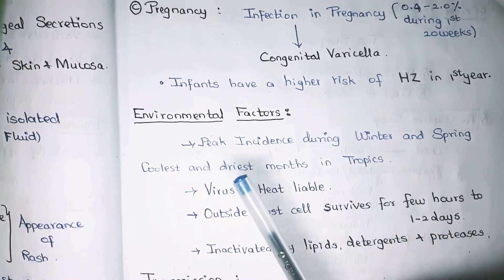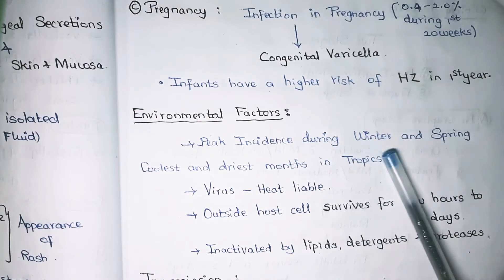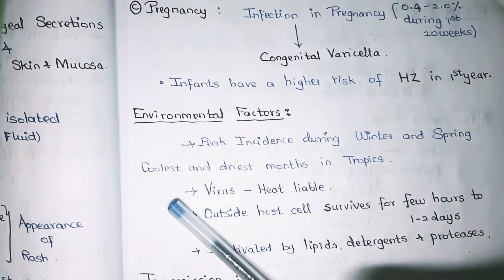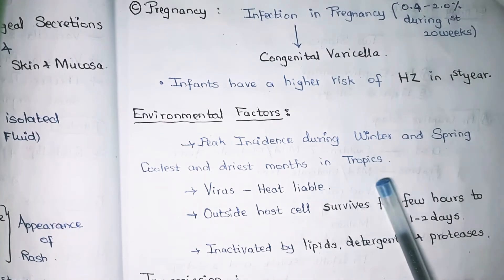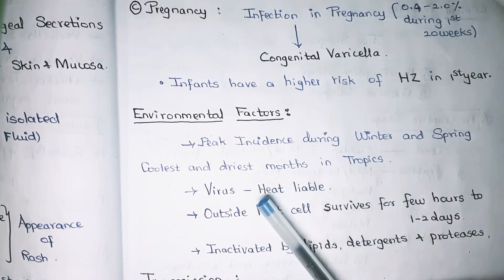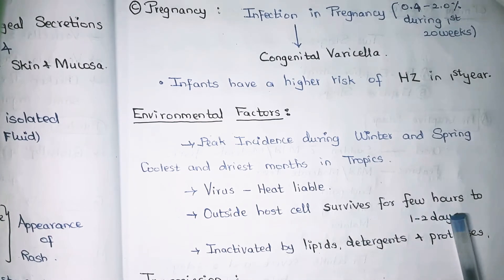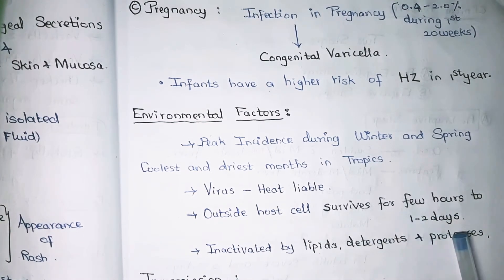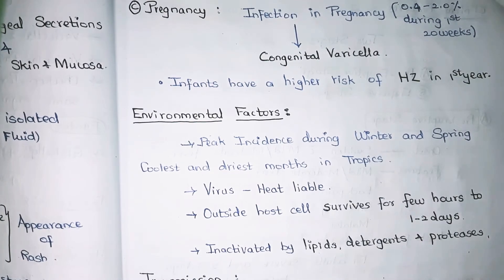Environmental factors: the peak incidence is during winter and spring seasons, mostly during the coolest and dry months in tropical regions. The virus is heat-labile and outside the host cell it can survive for only a few hours, up to a maximum of one to two days. It is mostly inactivated by lipids, detergents, and proteases.